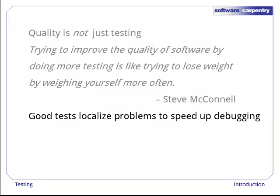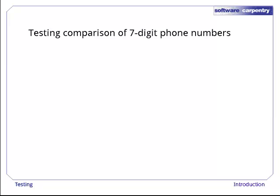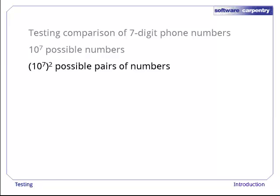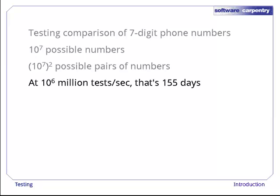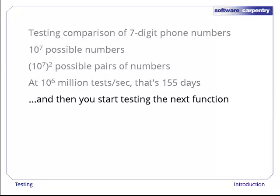It's also important to understand that testing can only do so much. For example, suppose you're testing a function that compares two seven-digit phone numbers. There are 10 to the 7th such numbers, which means that there are 10 to the 7th squared, or 10 to the 14th, possible test cases for your function. At a million tests per second, it would take 155 days to run them all.